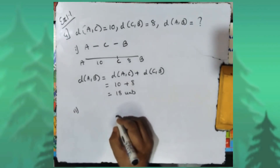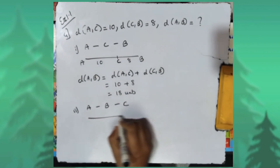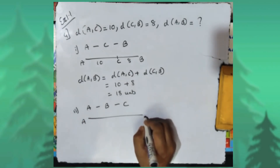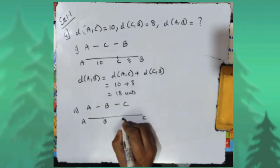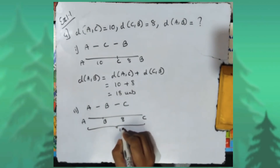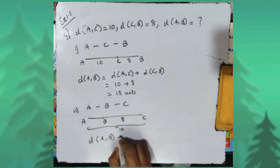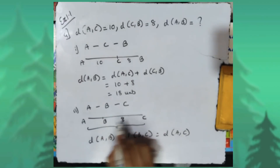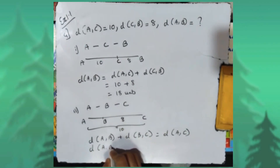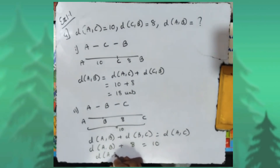Second possibility: point B is between A and C. In this figure, A is at one end and C is at the other, with B somewhere in between. The entire distance AC is ten and distance CB is eight. Distance AB plus distance BC equals distance AC, so distance AB plus eight equals ten, meaning distance AB equals ten minus eight, which is two units.